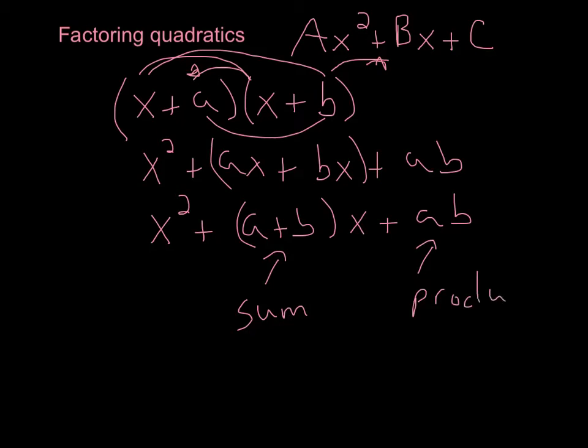So what we're working backwards to find are these two numbers. What we notice is that it's the sum of those two numbers that gives us the middle coefficient, and their product gives us the last term. So to find the tail number, two numbers need to multiply to give that product. And to find the middle term, I need the sum of those two values.